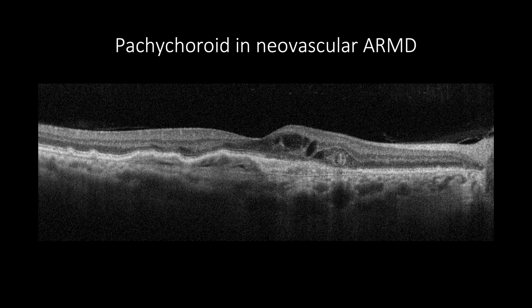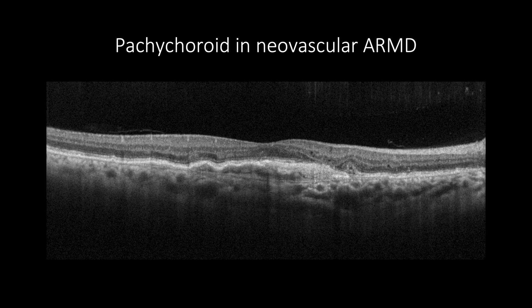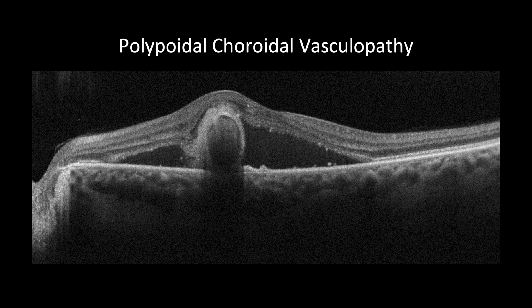This is a case of neovascular AMD showing intraretinal cystic changes with increased macular thickness, drusen, and fibrovascular PED; however, the choroid is thick with dilated Haller's. This cross section for the same patient post-treatment shows decreased macular thickness with resolved intraretinal fluids.